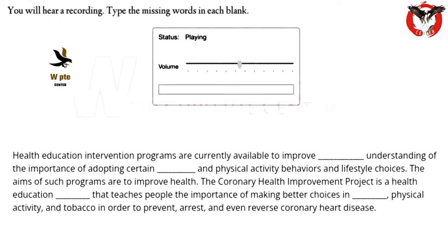Health education intervention programs are currently available to improve cognitive understanding of the importance of adopting certain dietary and physical activity behaviors and lifestyle choices. The aims of such programs are to improve health. The Coronary Health Improvement Project is a health education intervention that teaches people the importance of making better choices in nutrition, physical activity, and tobacco use, in order to prevent, arrest, and even reverse coronary heart disease.